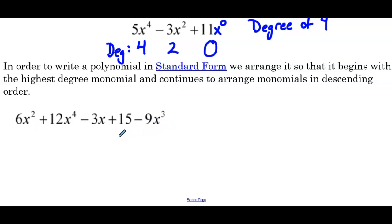So in the example that we've been given, we can see that it's not written in standard form. So let's go through the degree of each individual term. So we have a degree here. First term 6x², the degree would be 2. 12x⁴, degree of 4. -3x, degree of 1. 15, no variable, so we said that's degree 0. And then -9x³, degree 3. So we have to put it so that the degrees go in descending order.